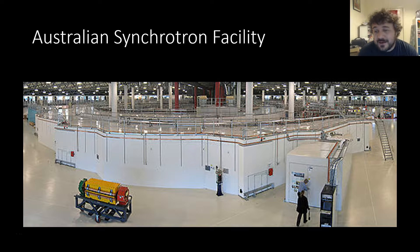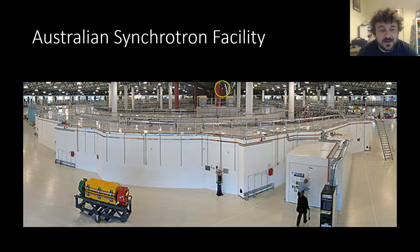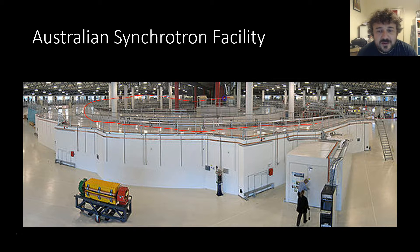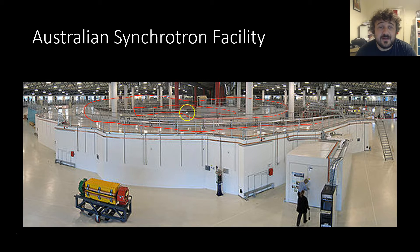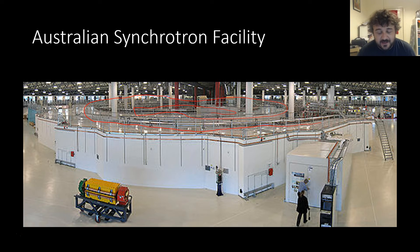This is where they're made — this is the Australian Synchrotron facility in Melbourne. You can see this large ring going around, and that's the beam path that the atoms take. They spin around and around and then crash into each other.